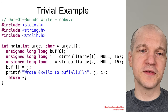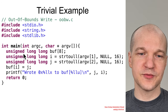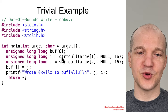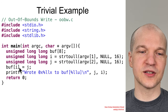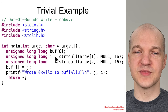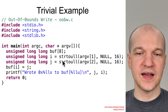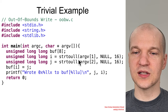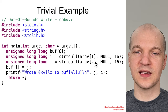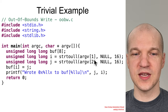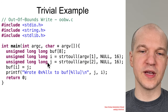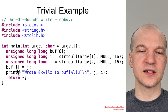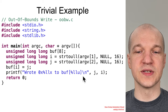Alright, trivial example of out-of-bound writes. We're literally going to give the attacker control over I and J and then write an attacker-controlled value. So the buffer is 8 bytes. We use strtoull to read from attacker-controlled argv into I, and attacker-controlled argv[2] into J, and write attacker-controlled data to a location of their choosing.